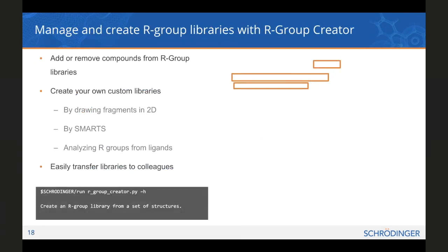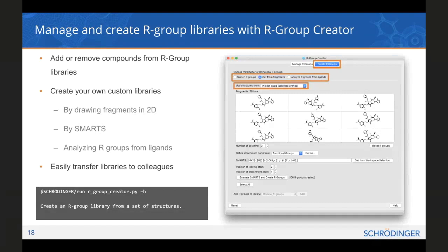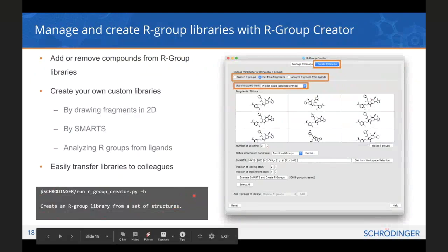We also have the ability, once you've honed in on a particular chemotype, to do R-group enumeration. If you just want to change the decorations around a scaffold or make minor tweaks, we can create different libraries based on R-groups. These R-groups can come from a number of locations: your own R-groups by SMARTS, or by analyzing R-groups from another set of ligands. You would choose the method for R-group enumeration, choose the structures to add R-groups to, and away you go. This can also be run from the command line, and libraries can be easily transferred to colleagues.